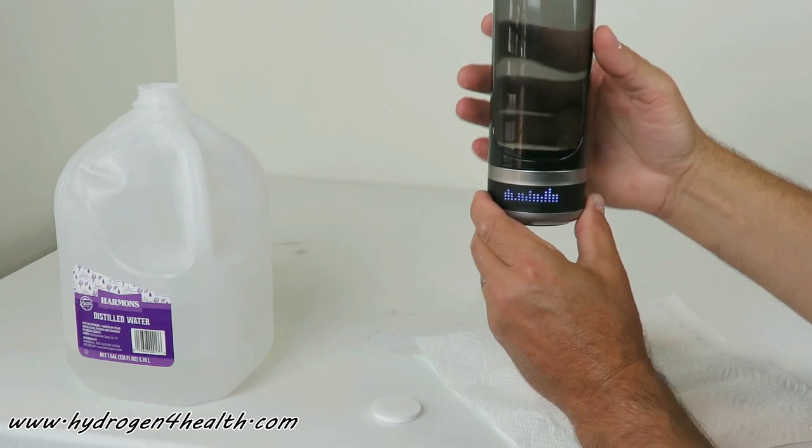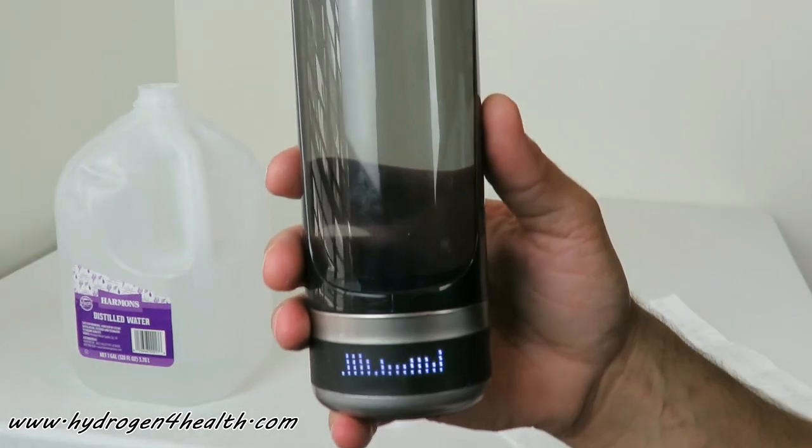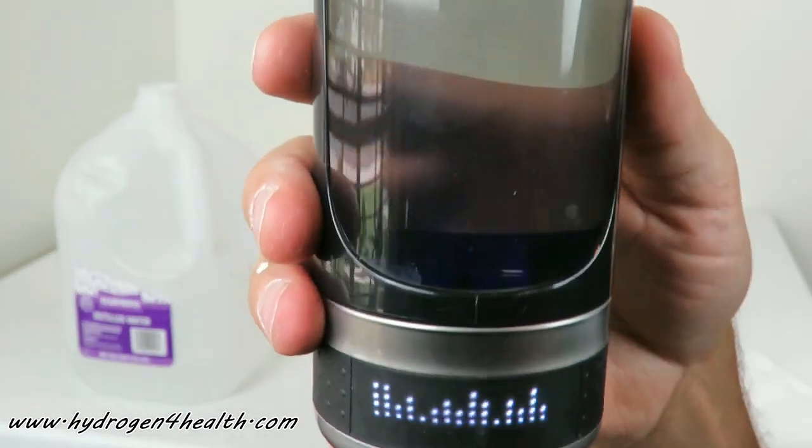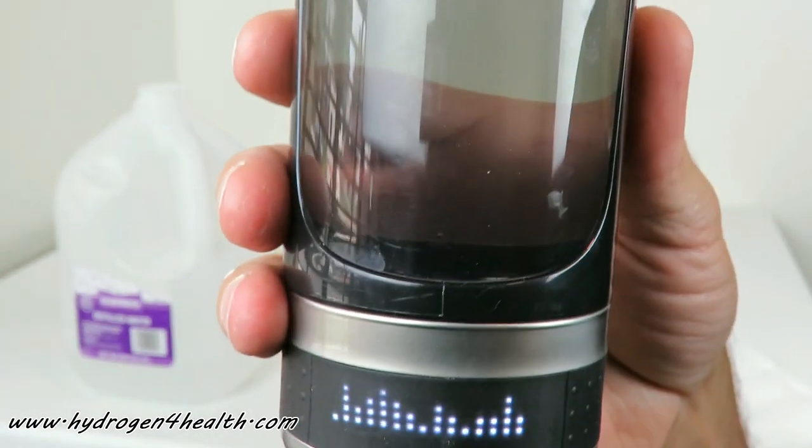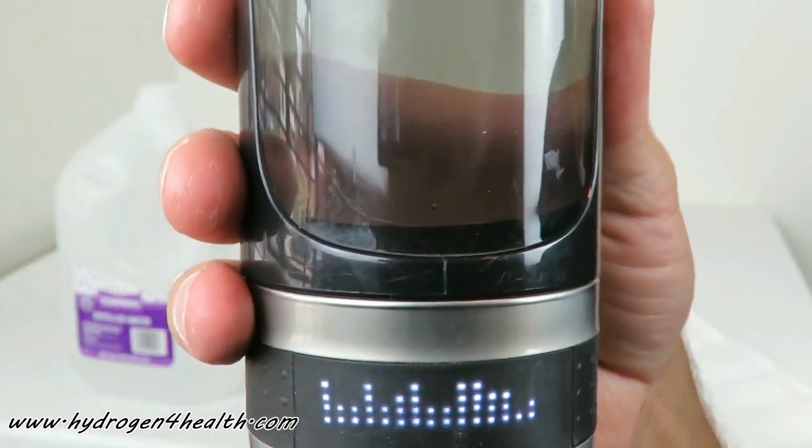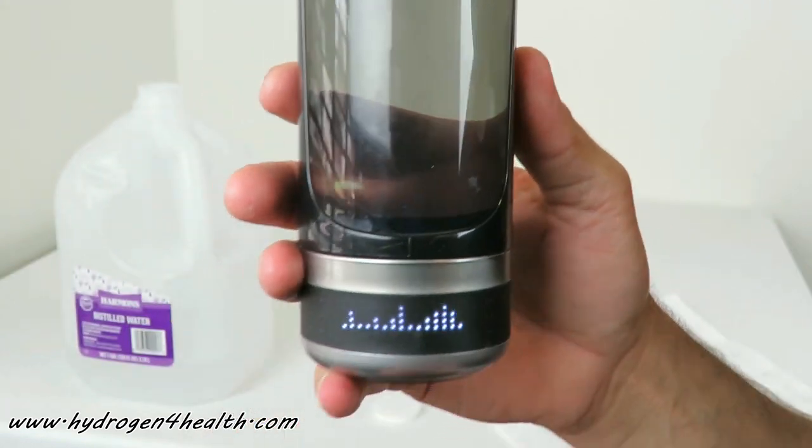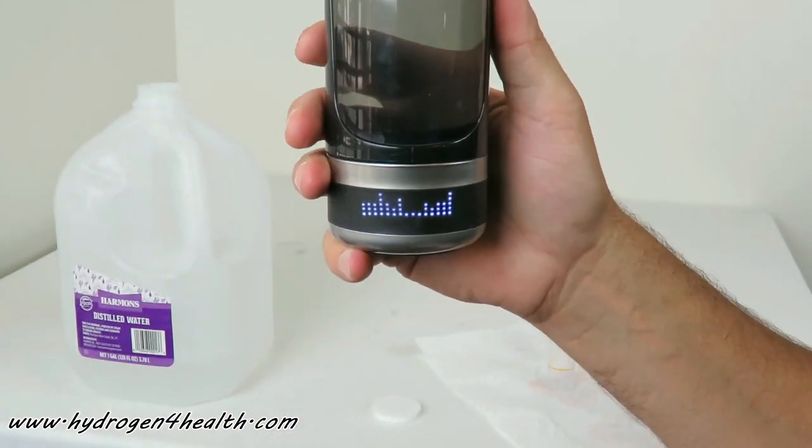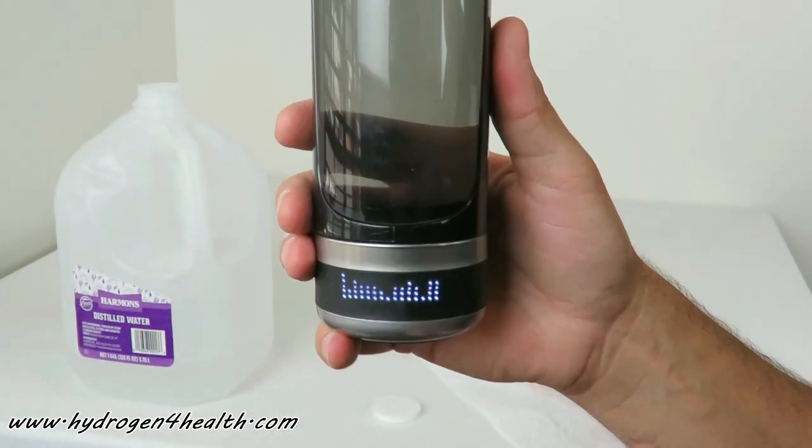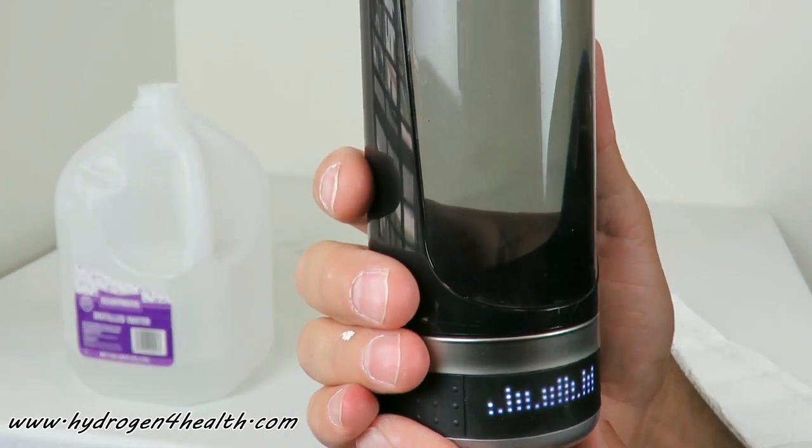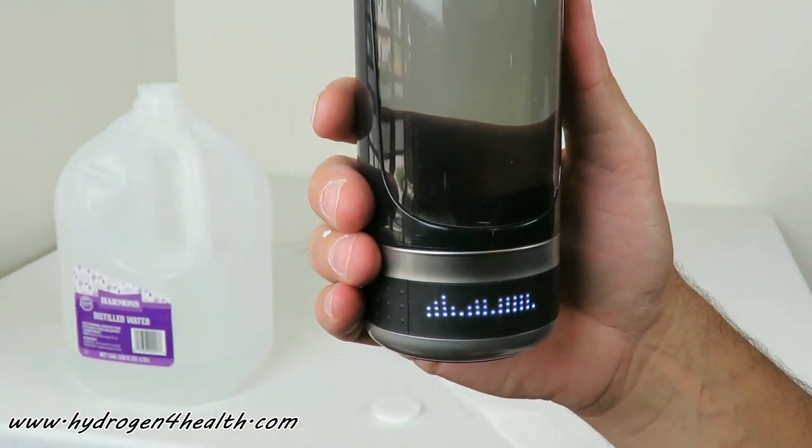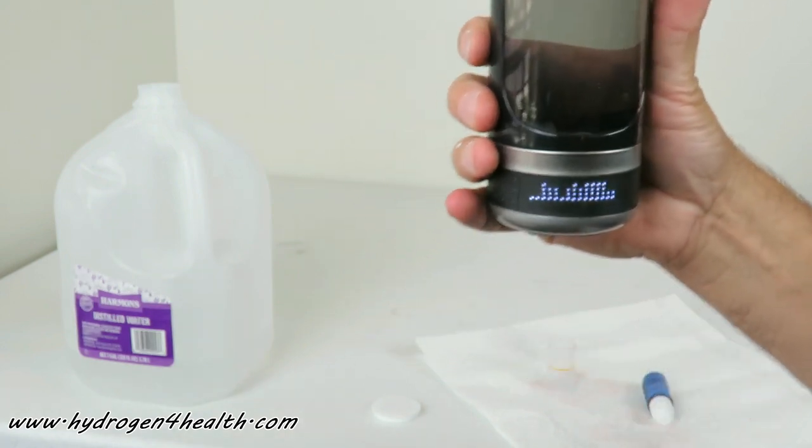And there it goes. If you look closely, you can see the hydrogen and oxygen being created at the bottom. So this type of bottle here will also put oxygen along with hydrogen into your water. As long as you're using distilled water, it won't generate any chlorine or ozone. So let's go ahead and let it run its cycle, and then we'll come back when it's done.